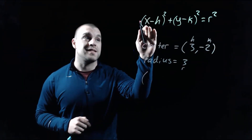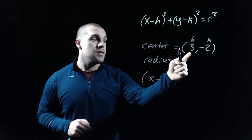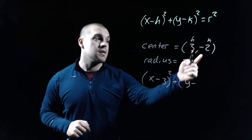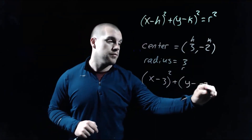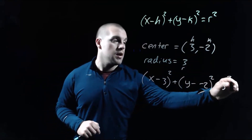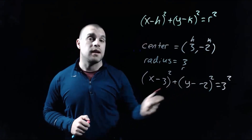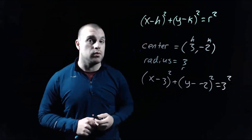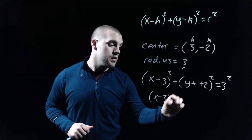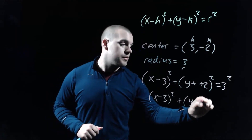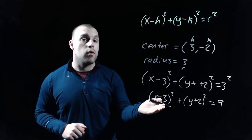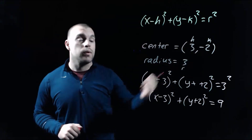Looking at the first set of parentheses, it says x minus h, so x minus 3 squared. Plus, in the second set of parentheses, y minus our k value, which is negative 2, squared. On the right-hand side we've got r squared, so we grab that 3 and square it. In that second set of parentheses it says y minus negative 2, so since we have a double negative, we turn that into addition. The left-hand side becomes x minus 3 squared plus y plus 2 squared, and on the right-hand side 3 squared gives us 9.